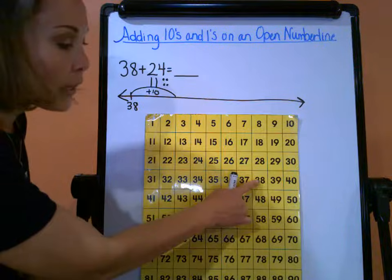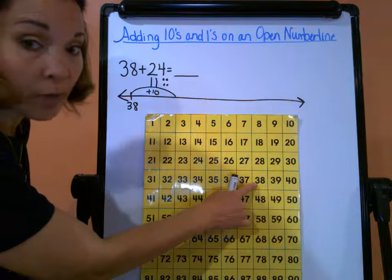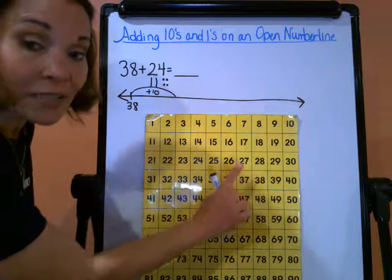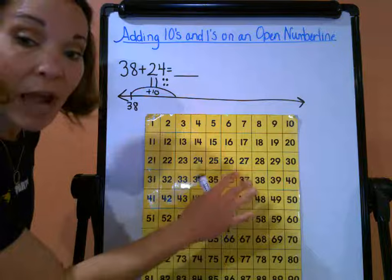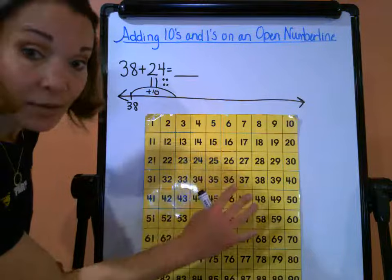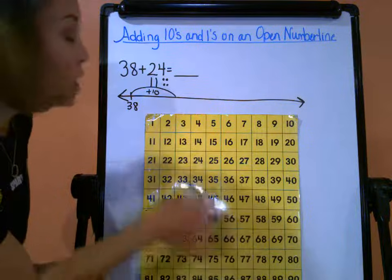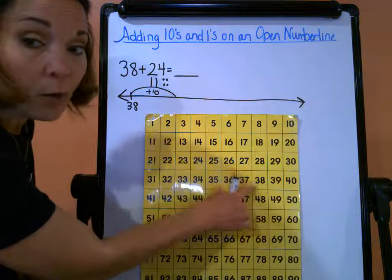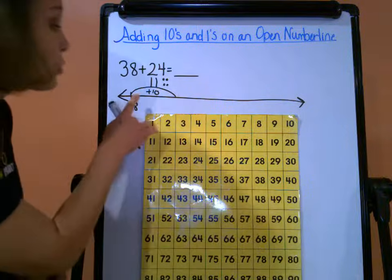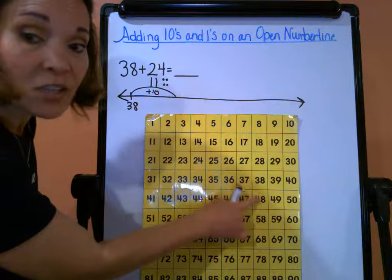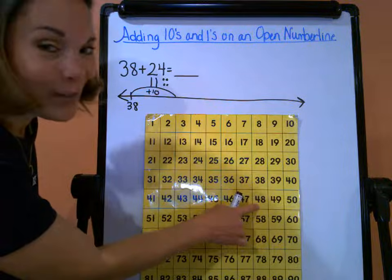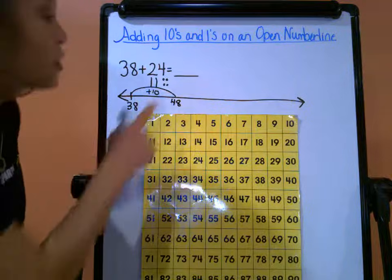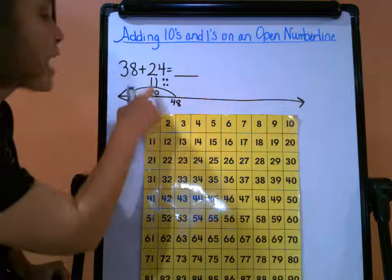Looking at my hundreds chart to help me, remember when you're going either down or up in that same column, you're either adding or subtracting by ten—they go in increments of ten. So remember I'm adding here, so the direction I want to go is down. So this is only one ten, that's one hop down. If you already didn't figure it out, it should be 48. Okay, so that's only my one ten.